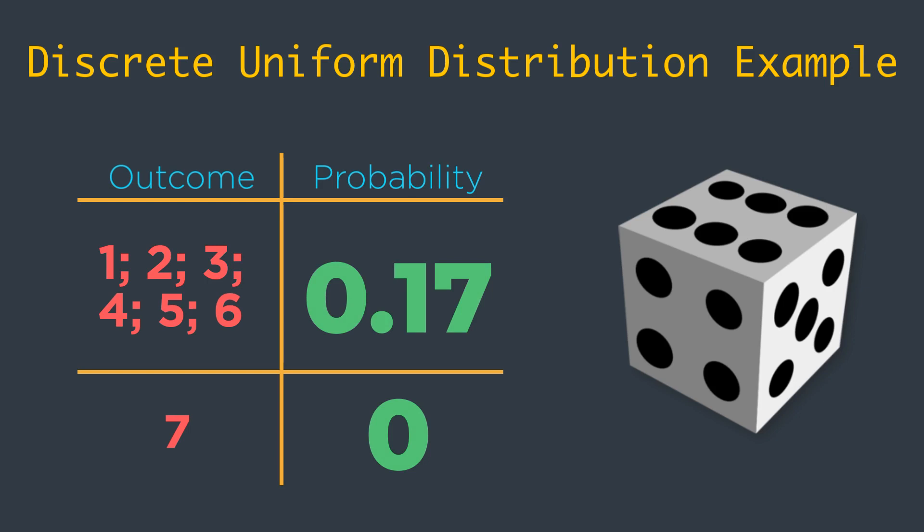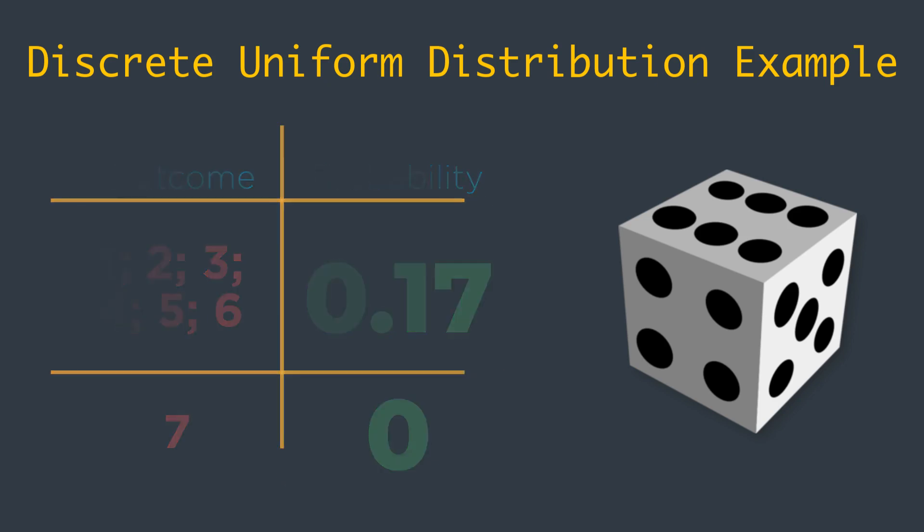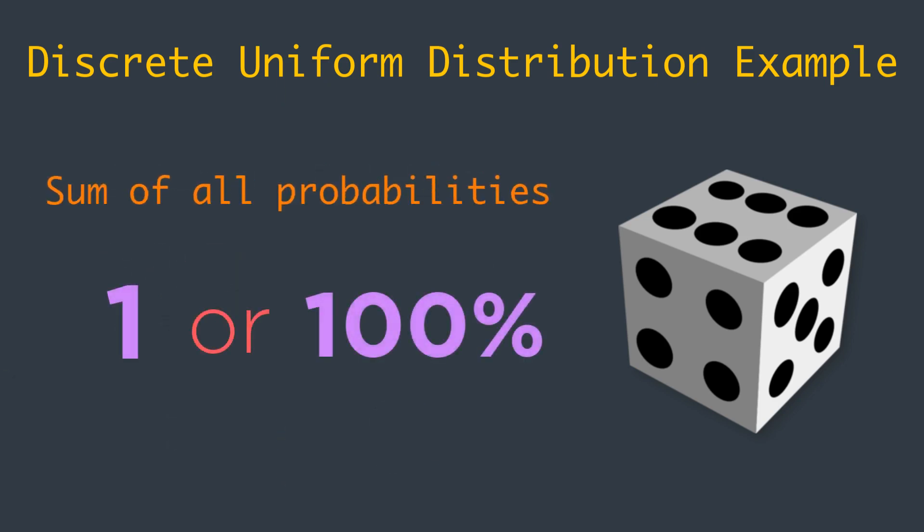The probability of getting 1 is 1 sixth or 0.17. The probability of getting 2 is also 0.17 and so on. To make sure that we have gone through all the possible values, the sum of their probabilities must be equal to 1 or 100%. Similar to what we discussed about getting a 7, for all other values the probability of occurrence is 0. And that's the probability distribution of rolling a die.